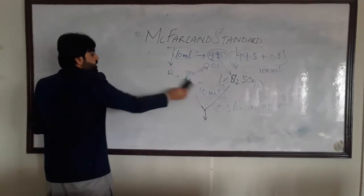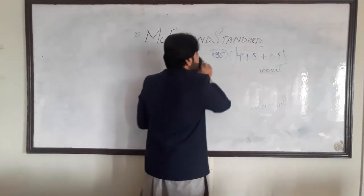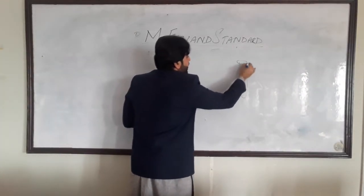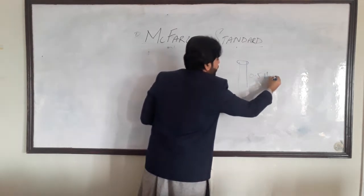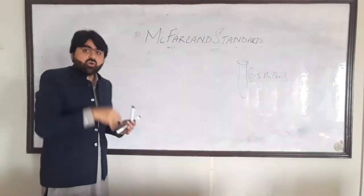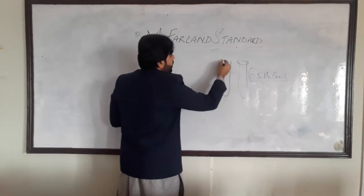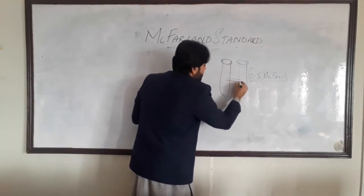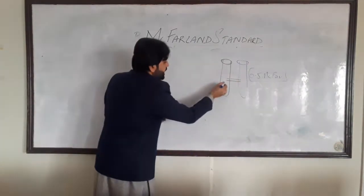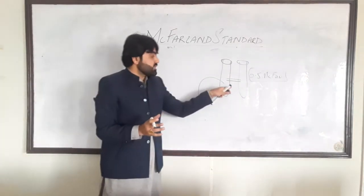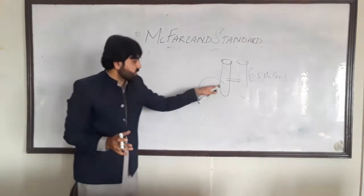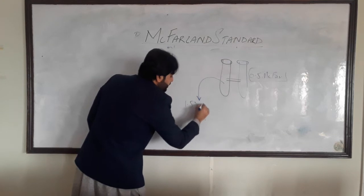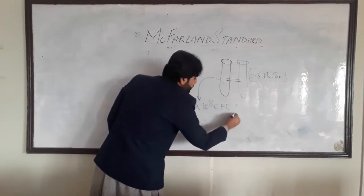The density of a bacterial solution compared to the 0.5 McFarland standard is very important. If you have a solution in a test tube with 0.5 McFarland standard density and you make the turbidity of your tested bacterial solution equal to this turbidity, the number of bacterial cells in that suspension would be 1.5 × 10⁸ CFU (colony forming units) per ml.